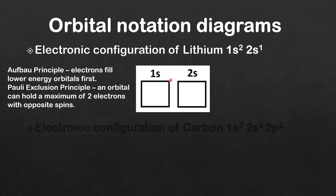Once we have the electronic configuration we can draw the orbital notation diagram. We draw square boxes that represent atomic orbitals — one for the 1s orbital and one for the 2s orbital. Before drawing, let's review the Aufbau principle: electrons fill lower energy orbitals first, and the Pauli exclusion principle: an orbital can hold a maximum of 2 electrons with opposite spins.